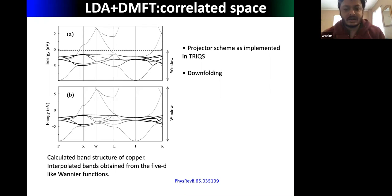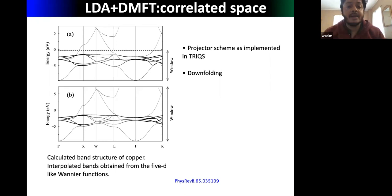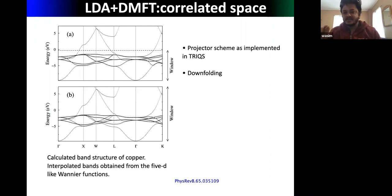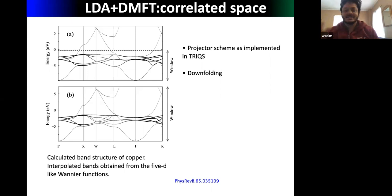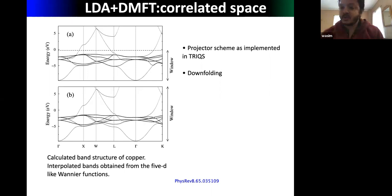If you take the whole window including both s and d bands, your system size becomes really large, and dangerously it gives off-diagonal components in the Hamiltonian. Off-diagonal components cause problems in DMFT calculations. So constructing this Hamiltonian for mixed entangled band structures is really difficult.